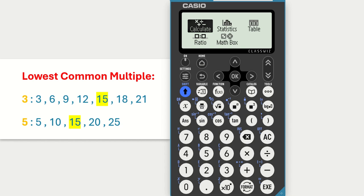In this tutorial video, we are looking at how to find the lowest common multiple on the Casio FX 83 GTCW calculator. Same steps for the 85 GTCW.